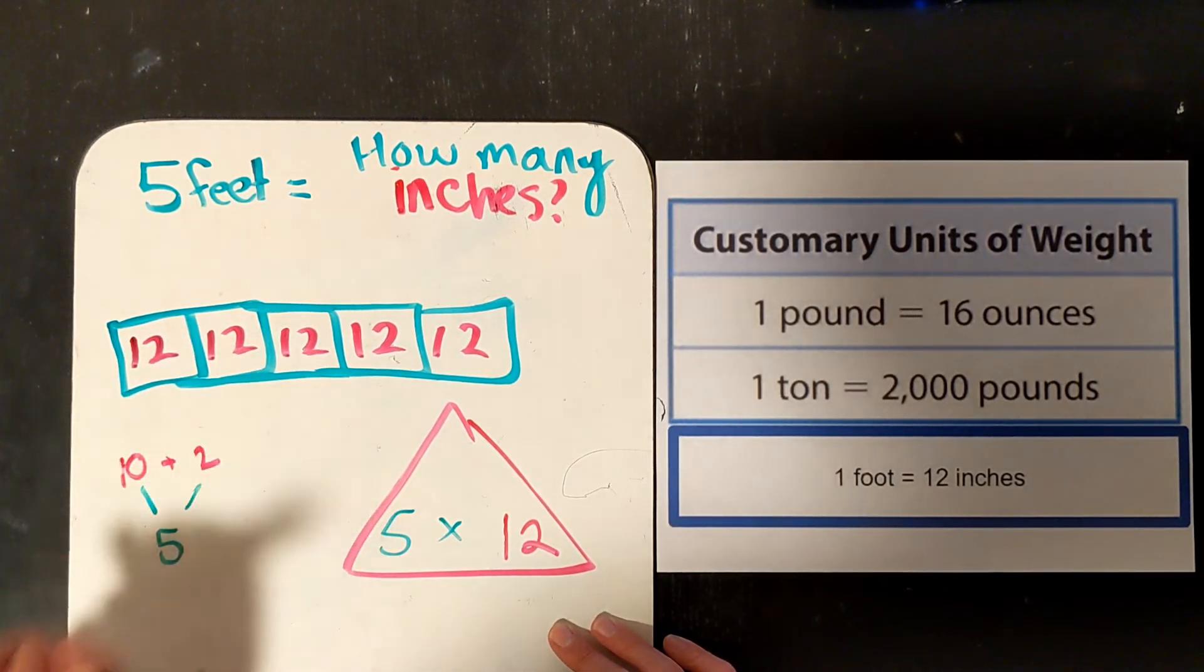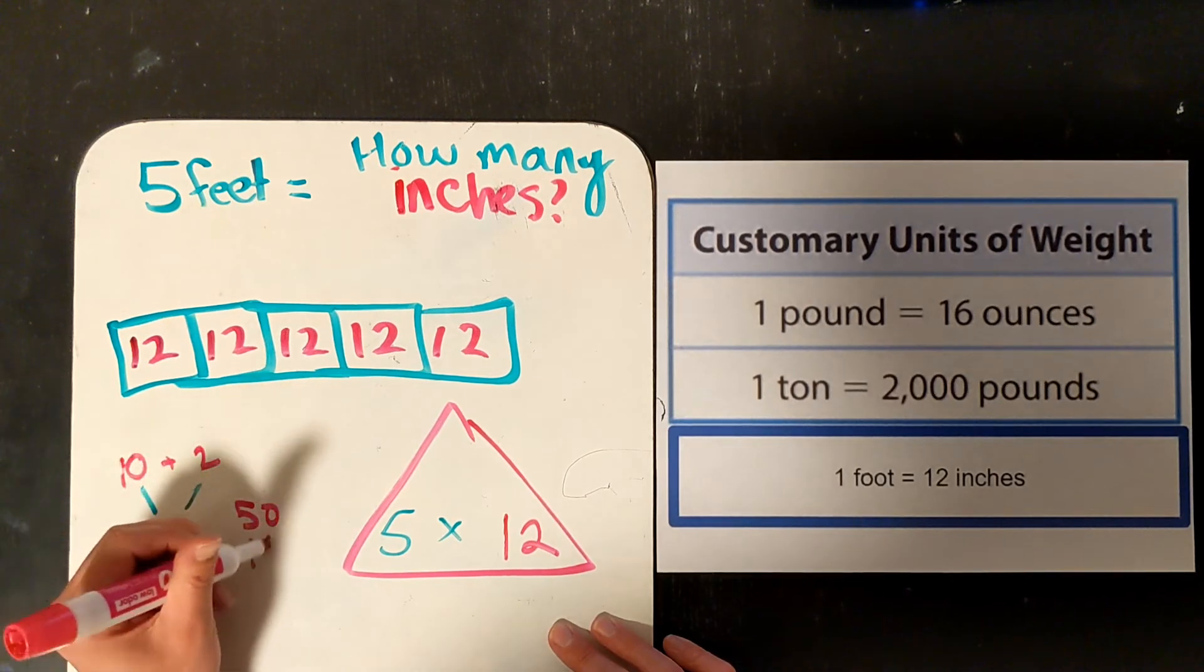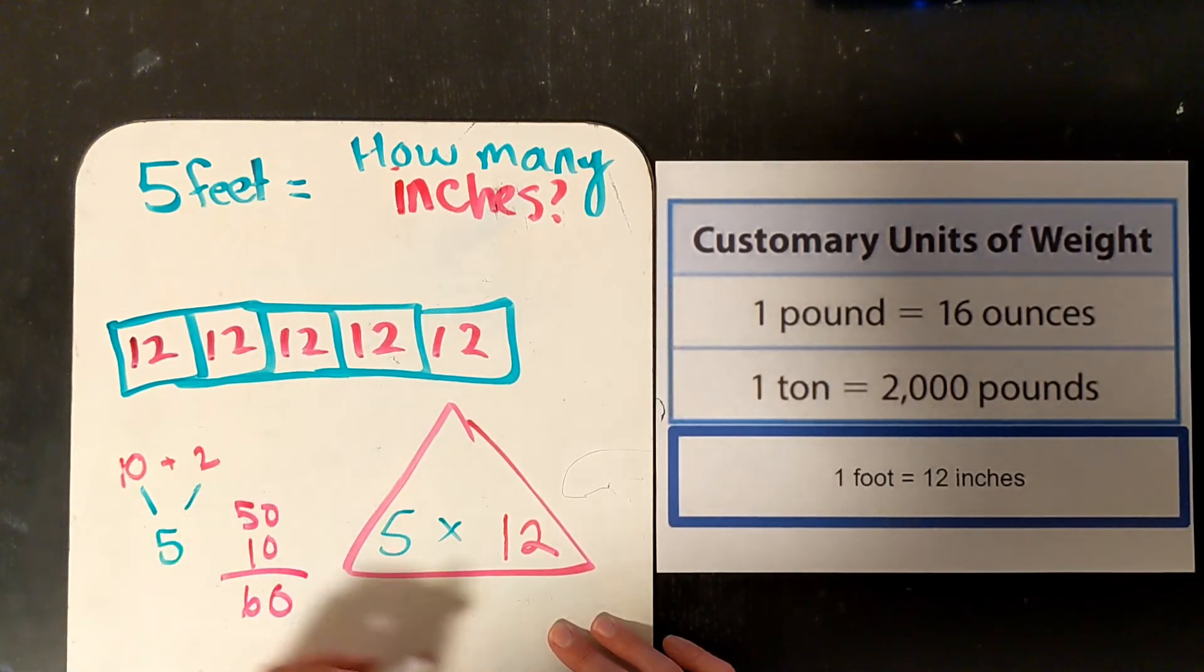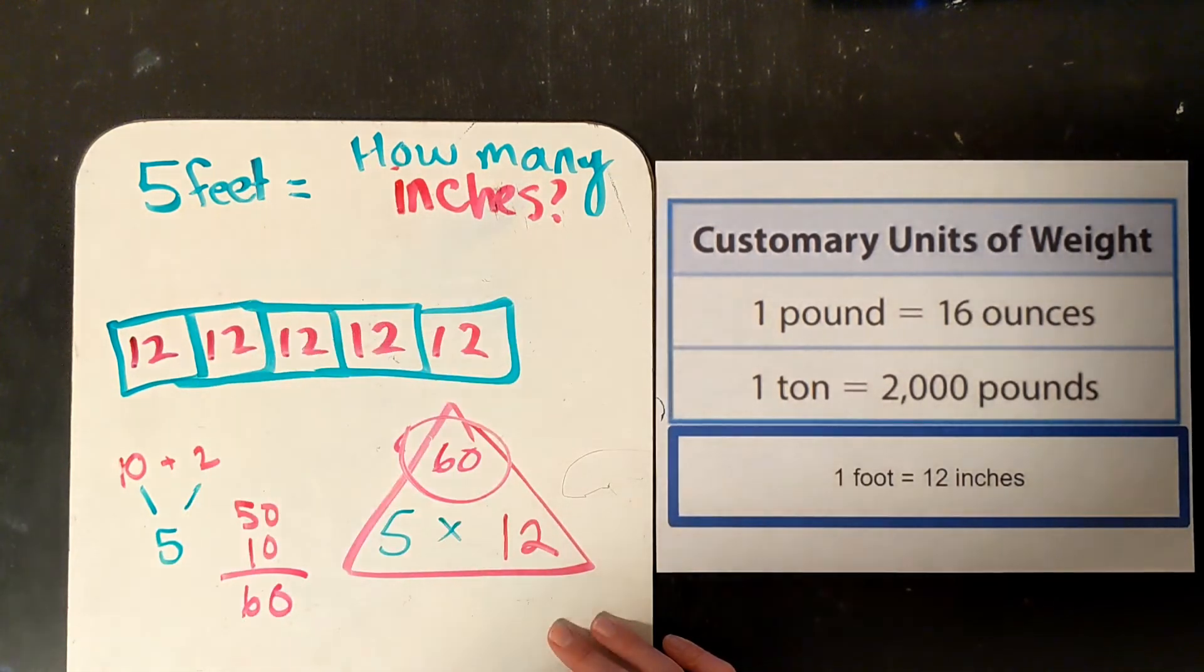5 times 10 is 50. 5 times 2 is 10. So, 5 times 12 is 60. 60 inches.